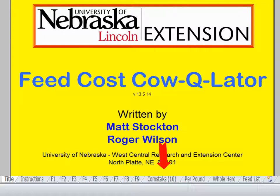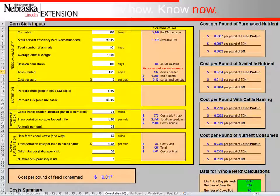Next, I'd like to point out the corn stalks tab. If you're grazing corn stalks, this tab helps you estimate what the cost per pound of corn stalks consumed actually is. Any cells in white are those that you are able to input your own information into, and the colored boxes are calculated values based off of the information you input, so you cannot change those.